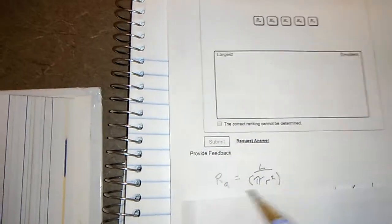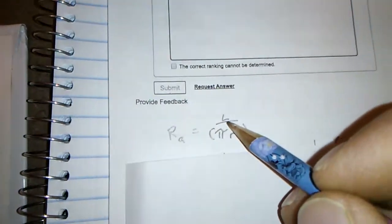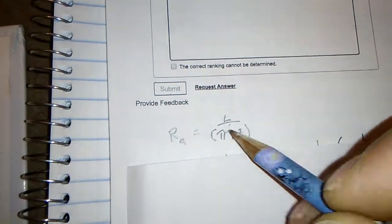First, resistance of A. Since rho is just one, we just have length over pi R squared. Let's move on to two.